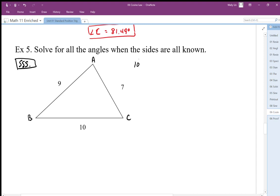So then the other two sides, it doesn't really matter: 9 squared plus 7 squared minus 2 times 9 times 7 cosine. And what's important is that angle A matches that opposite side 10.